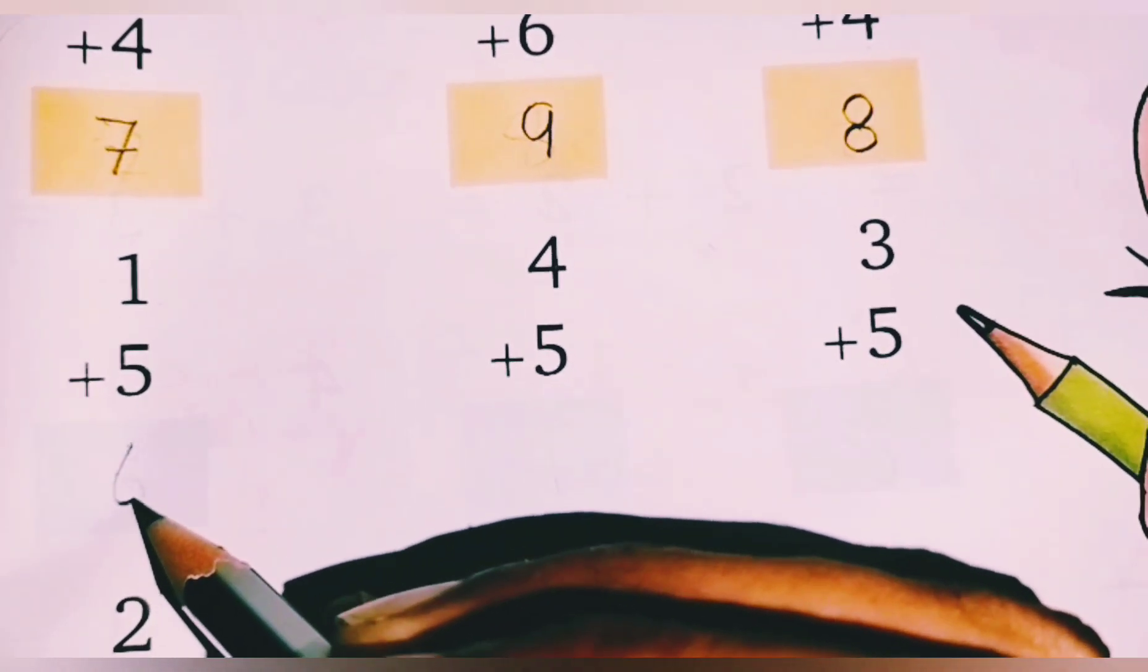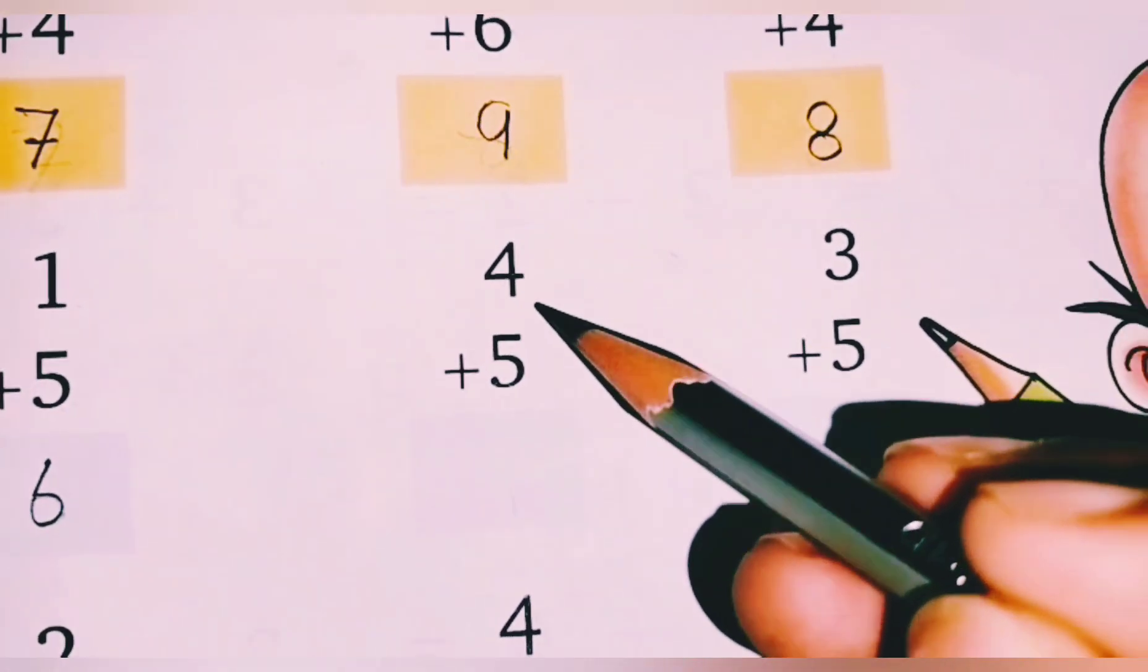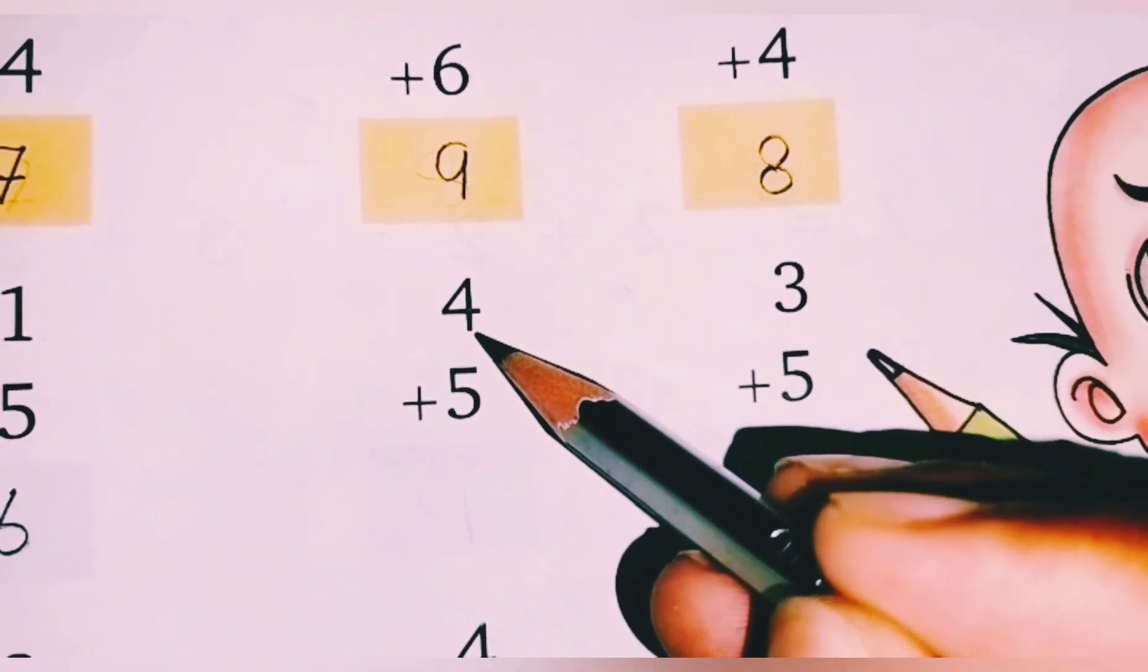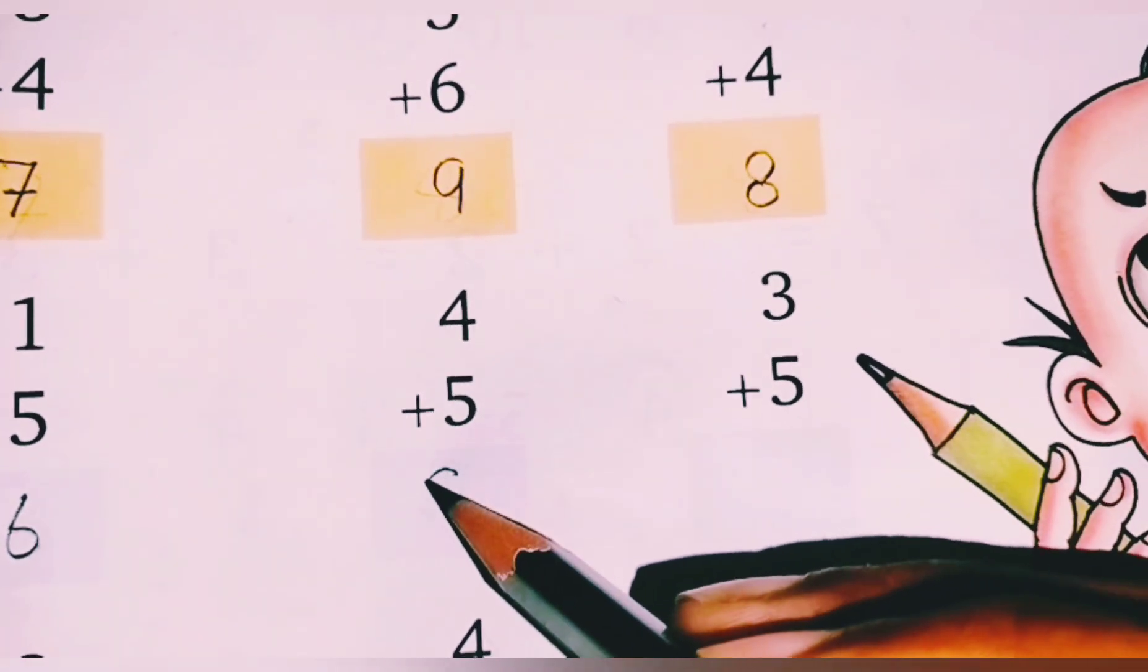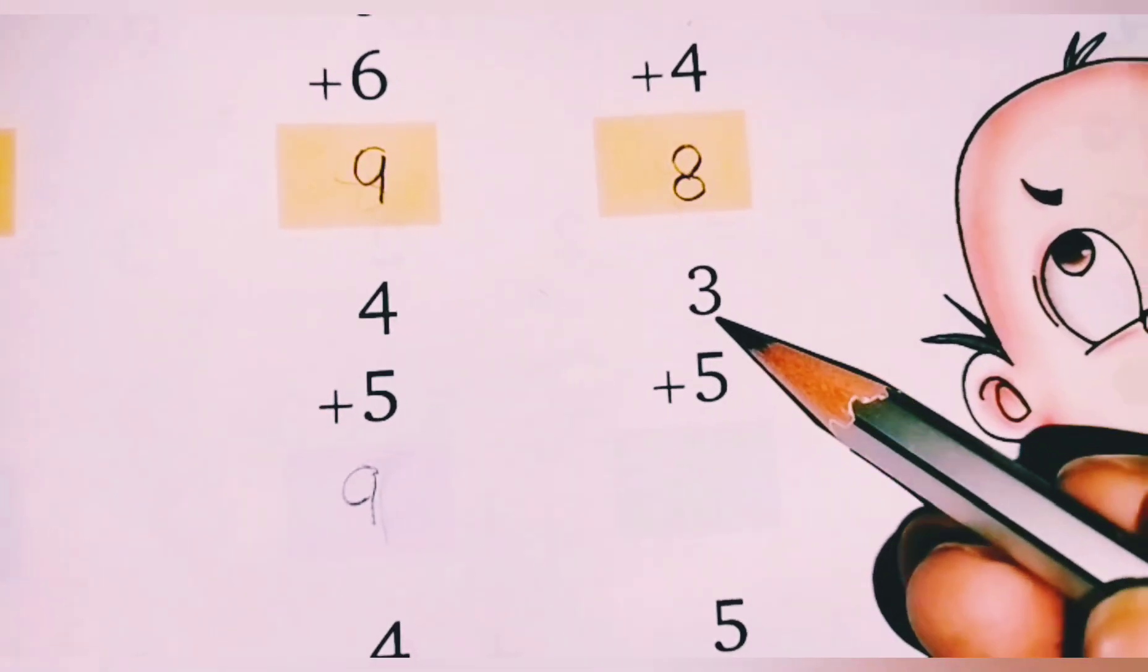6. Okay, and then the next number is 4. 4, 5, 9. Nine. Very good.